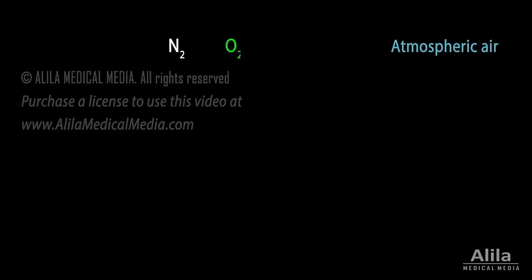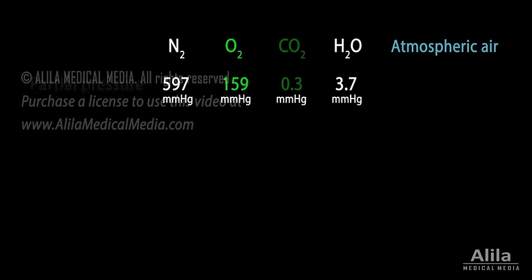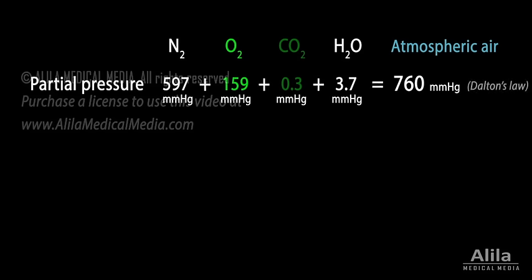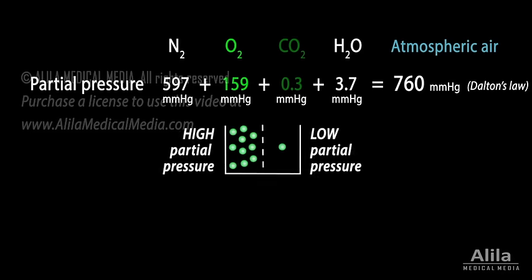Atmospheric air is a mixture of gases, each of which independently contributes to its total pressure. The pressure of each individual gas is known as partial pressure. The atmospheric pressure is the sum of all partial pressures of gases that make up its content. The direction of gas movement from one area to another is determined by the difference in its partial pressure — a gas always moves from higher to lower partial pressure.